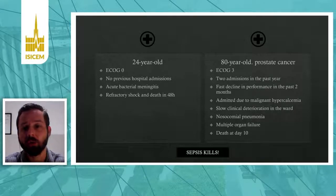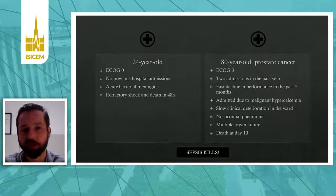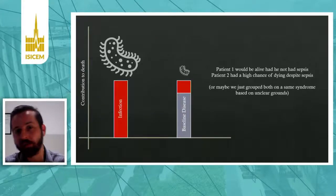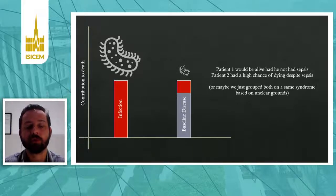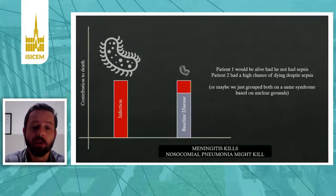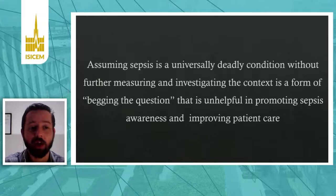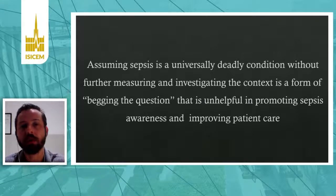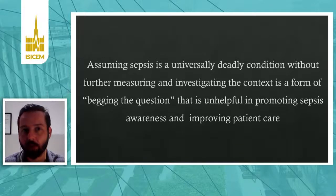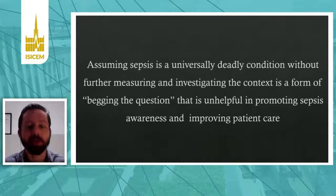If you have to guess, of course, you can say that sepsis kills in both scenarios. But if you have to guess how much sepsis changed the outcome, it's clear that for the first patient, all the mortality was due to the infection, while for the second patient, much of the mortality was due to the baseline disease, and perhaps sepsis was just the final knock and was causing death by a smaller percentage than in the first patient. If we assume that sepsis is a universally deadly condition without further investigating it, this is begging the question. To improve care and actually save lives for sepsis patients, you have to understand where sepsis is more deadly and where it may not be the primary problem of the patient.